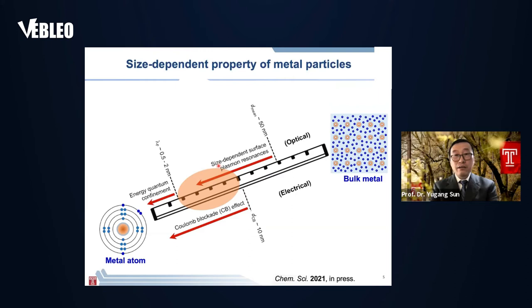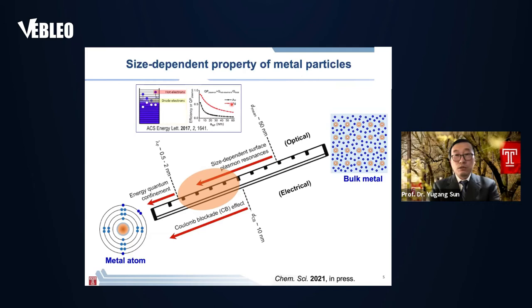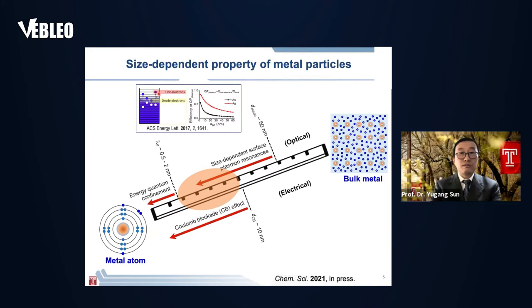Surface plasmon resonance can enable strong light absorption in the metal nanoparticles. Gold and silver are very typical plasmonic nanoparticles. The light absorption in these metal nanoparticles can excite electrons to generate hot electrons with high energy near the surface of the nanoparticle, as well as lukewarm electrons within the nanoparticles.